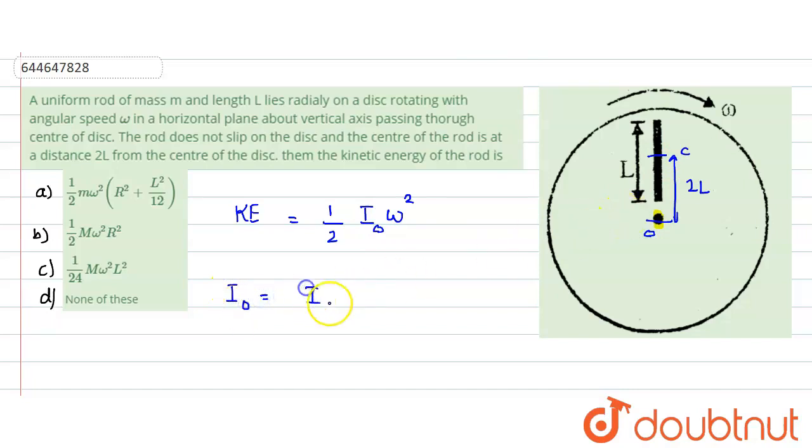Now moment of inertia of rod about o, about this point, would be equals to moment of inertia of rod about center plus m into a square, where a is the distance between the two. By parallel axis theorem, we can find this value, the moment of inertia value.